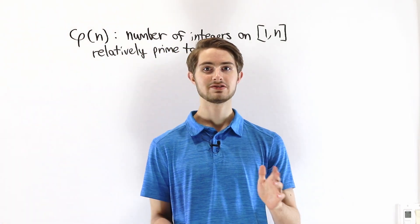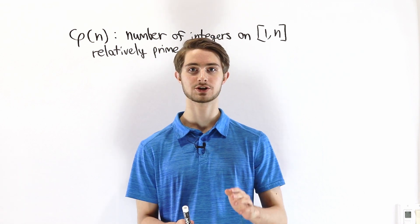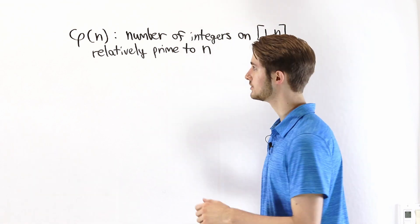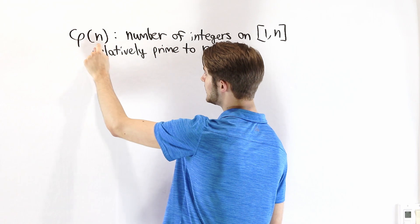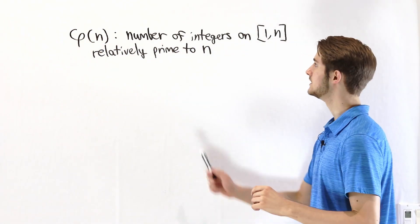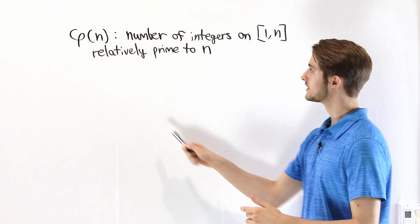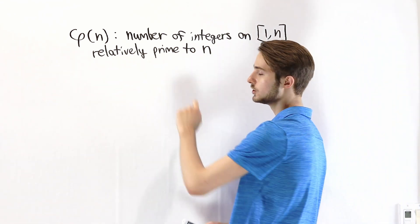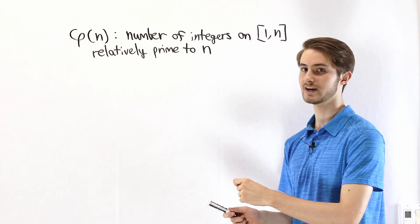We are going to go over some of the basic properties of Euler's totient function, which is a very important function in number theory that pops up in a ton of important theorems. Euler's totient function is usually denoted by the Greek letter phi, and we define the totient to be the number of integers on the interval 1 to n inclusive that are relatively prime to n. Relatively prime is another word for coprime, meaning that the number shares no prime factors with n.